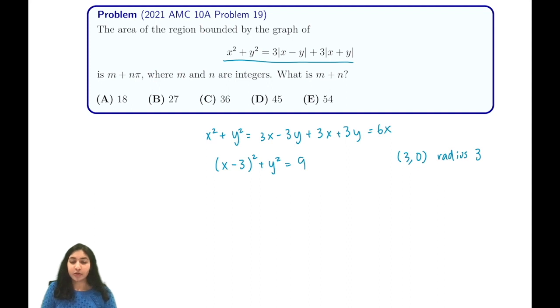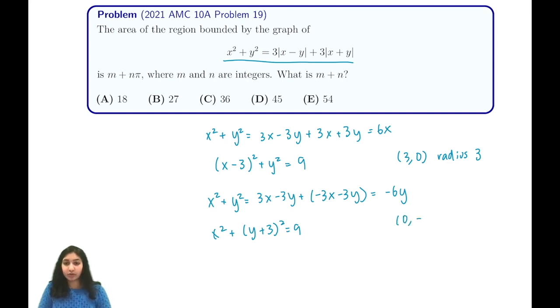Let's look at some other expressions. We have x² + y² = 3x - 3y + (-3x - 3y), which is equivalent to -6y. This evaluates to x² + (y + 3)² = 9, again by completing the square and bringing it over to the other side. This is a circle of center (0, -3) with radius 3.